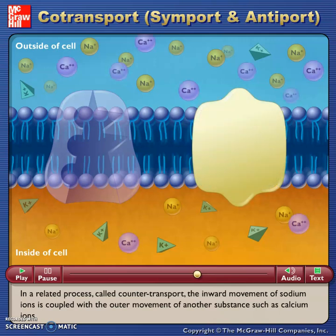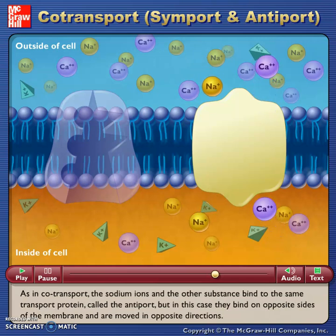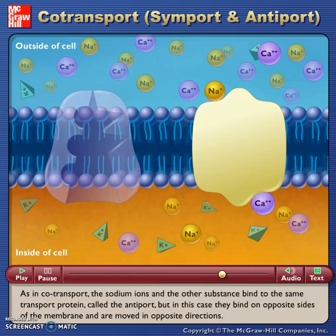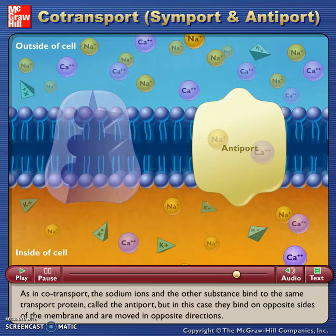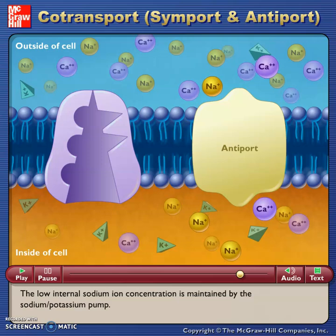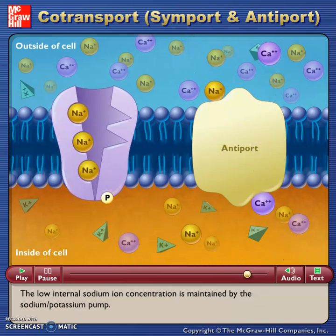In a related process called counter-transport, the inward movement of sodium ions is coupled with the outward movement of another substance such as calcium ions. As in co-transport, the sodium ions and the other substance bind to the same transport protein called the antiport, but in this case they bind on opposite sides of the membrane and are moved in opposite directions. The low internal sodium ion concentration is maintained by the sodium-potassium pump.